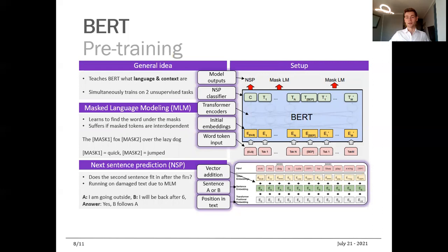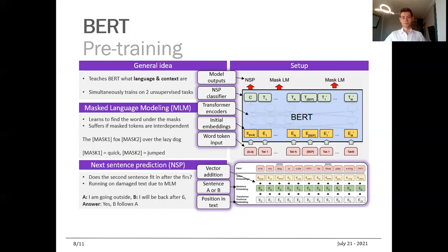We're going to go over the pre-training stage, which is the bulk of the training procedure where you train on a large corpus. It teaches BERT what language and context are, simultaneously training on two unsupervised tasks. The first is masked language modeling, where you take sentences from the text corpus, mask out some of the words — for example in 'The quick fox jumped over the lazy dog,' you mask 'quick' and 'jumped' — and you ask BERT to predict which words are under the masks. BERT doesn't have information about those words but needs to predict them.